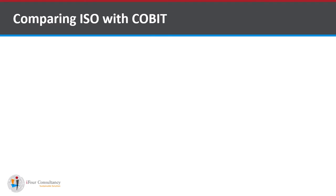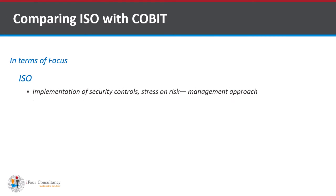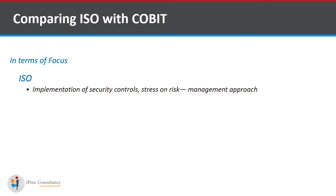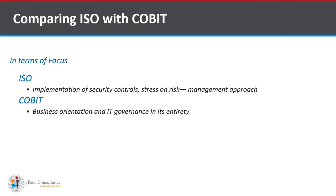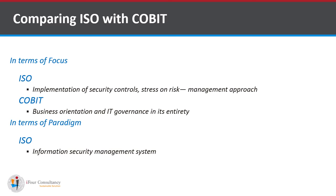Now comparing ISO with COBIT in terms of focus and paradigm: ISO focuses on the implementation of security controls with a stress on a risk management approach. COBIT is business-oriented and covers IT governance in its entirety. In terms of paradigm, ISO uses an Information Security Management System, while COBIT uses planning of IT processes.